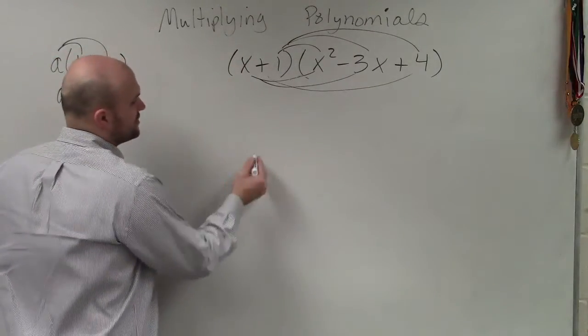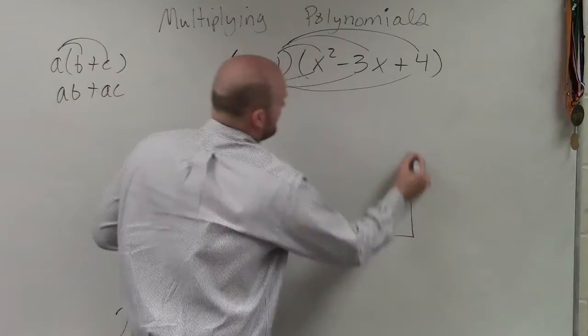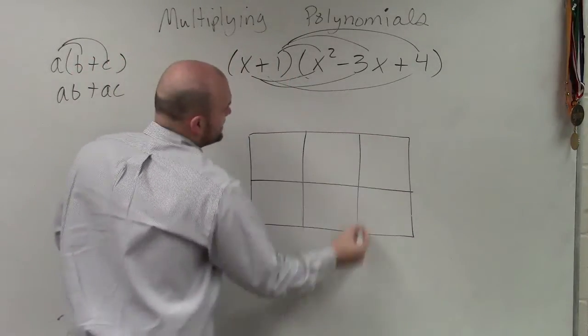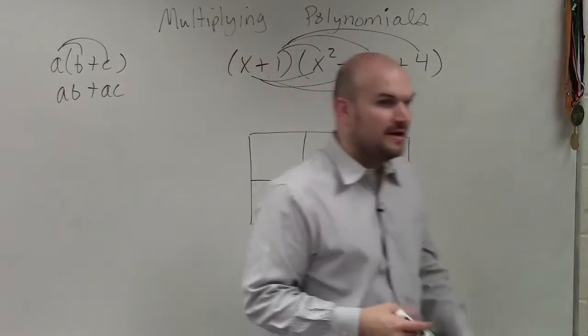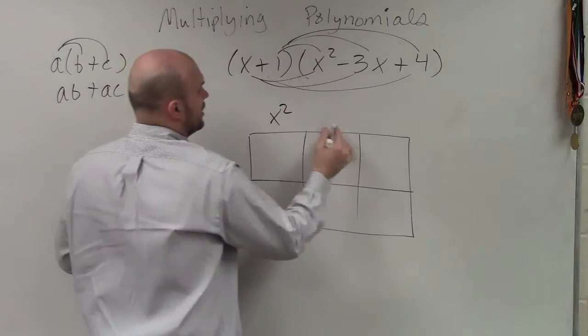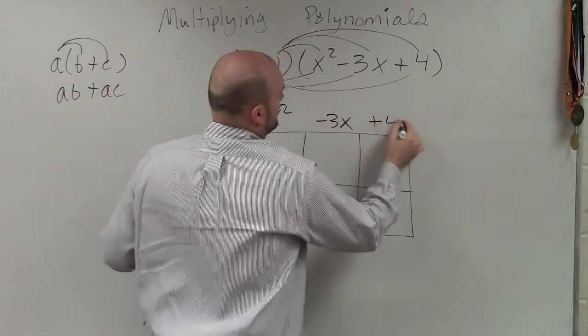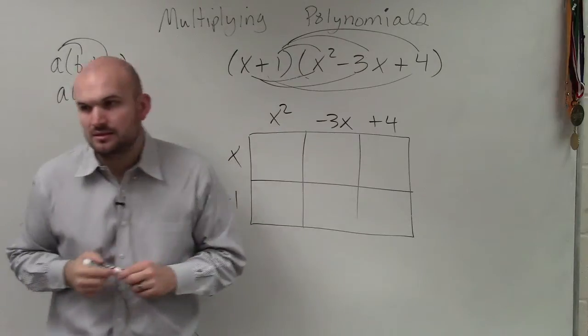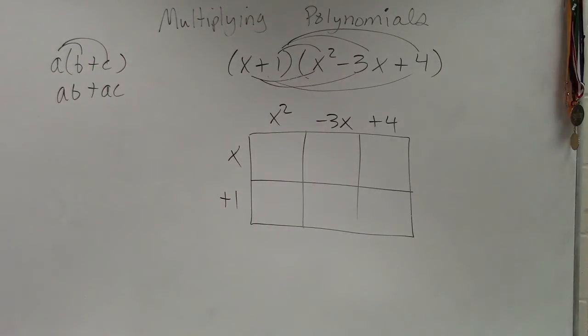So what I prefer to do when I start multiplying binomials and trinomials and so forth is I like to create a box to represent my multiplication. And I make a box that's going to represent the trinomial up top and the binomial on the side. Does everybody see how I kind of labeled those side lengths?